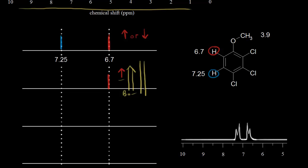The effective magnetic field felt by the blue proton has increased — it's larger than the applied magnetic field because the red proton's magnetic field is adding to it. Remember what that does to the energy difference between the alpha and beta spin states: if you increase the magnetic field, you increase the difference in energy between alpha and beta. Therefore you get a higher frequency signal and a higher chemical shift than expected. So this has the effect of increasing the chemical shift for the blue proton.